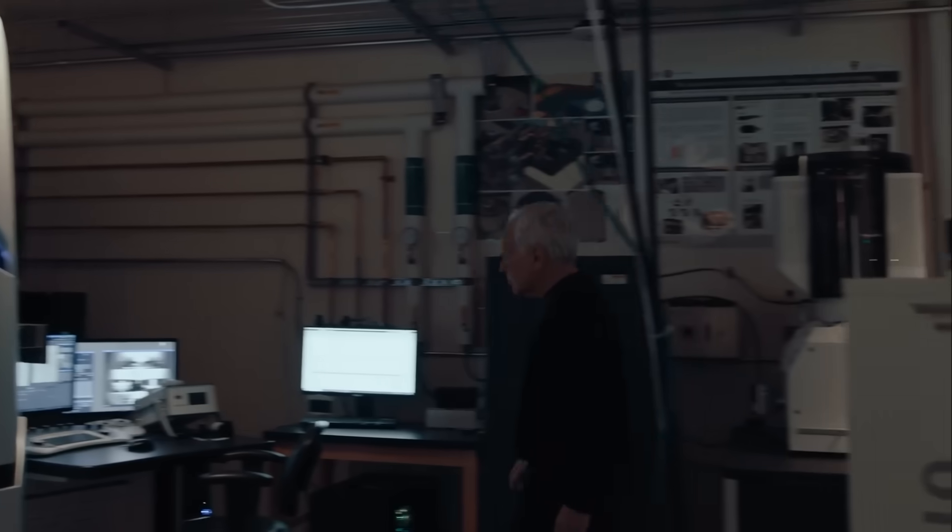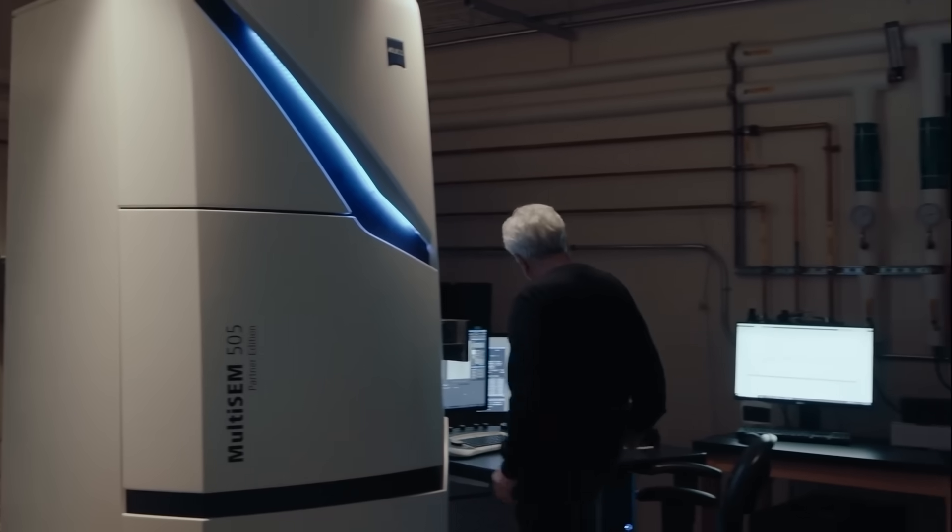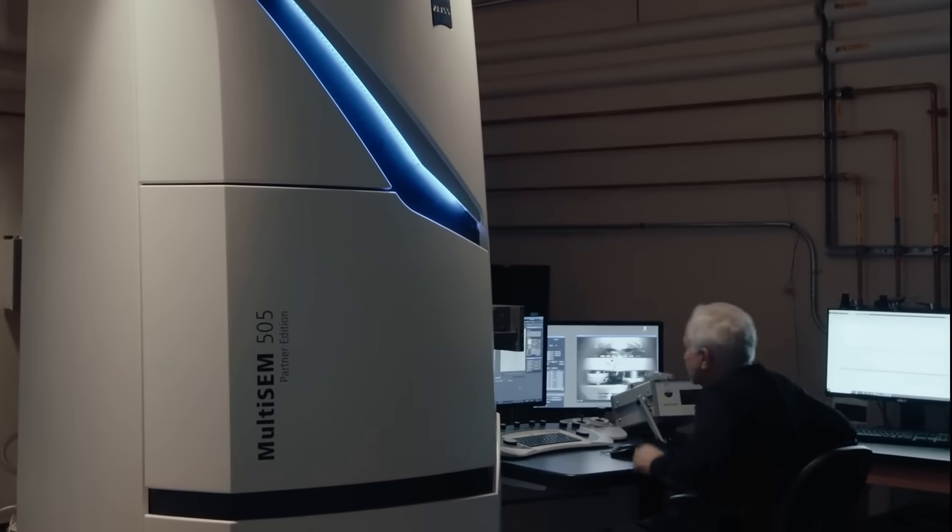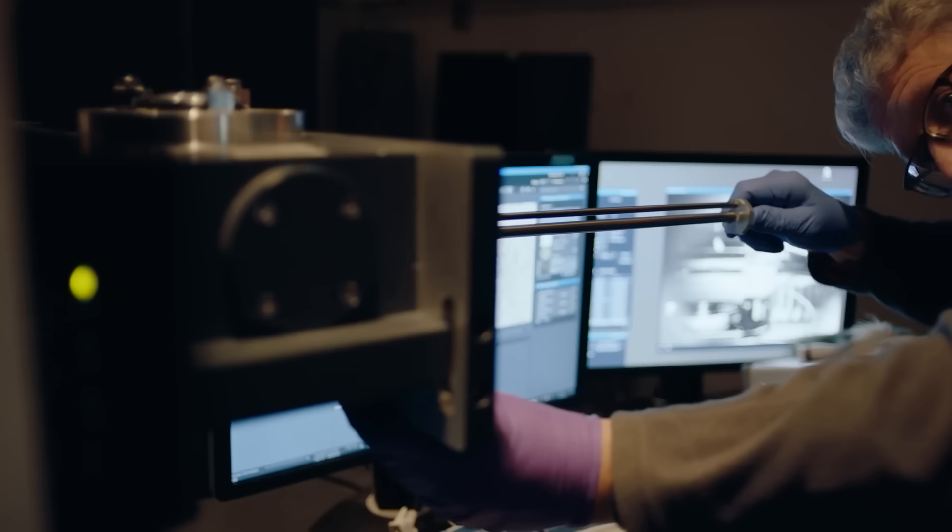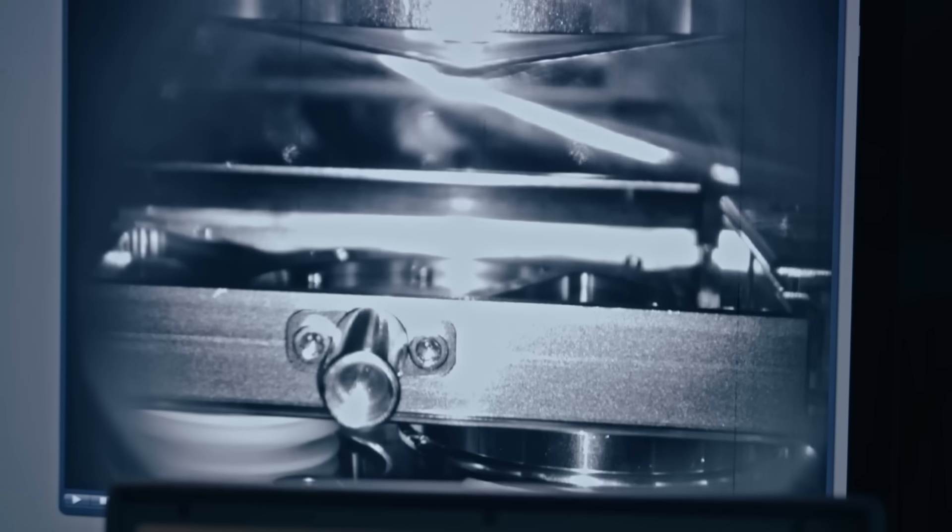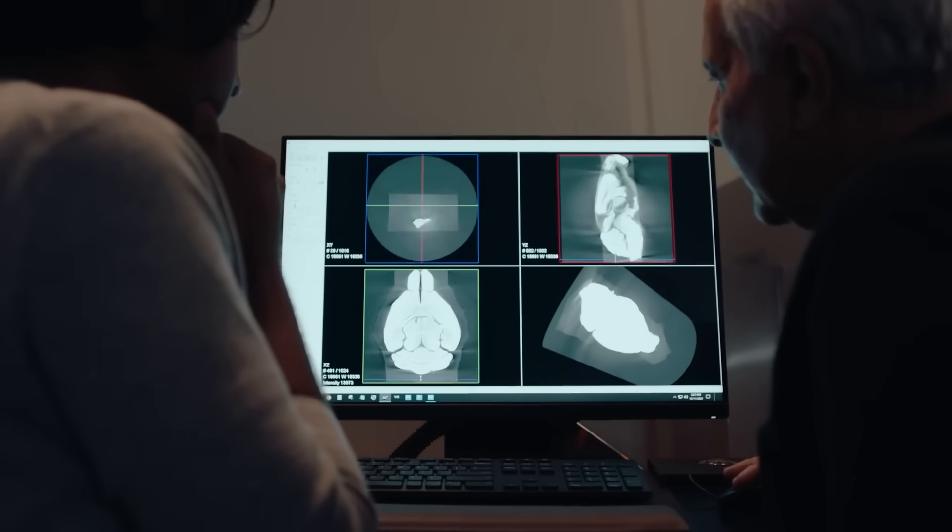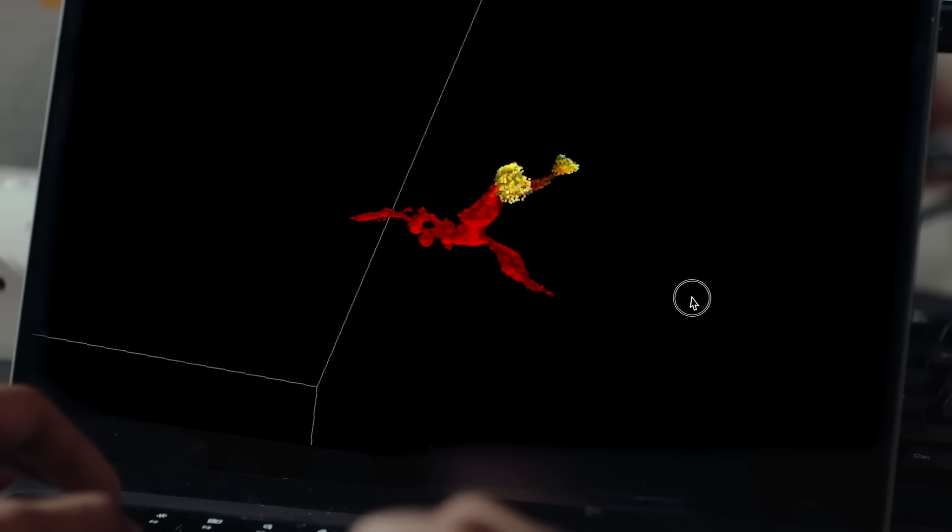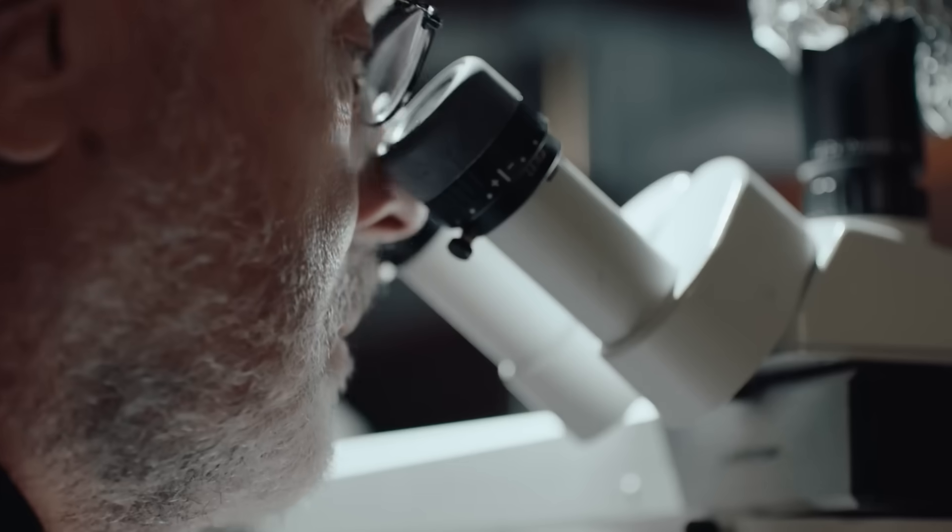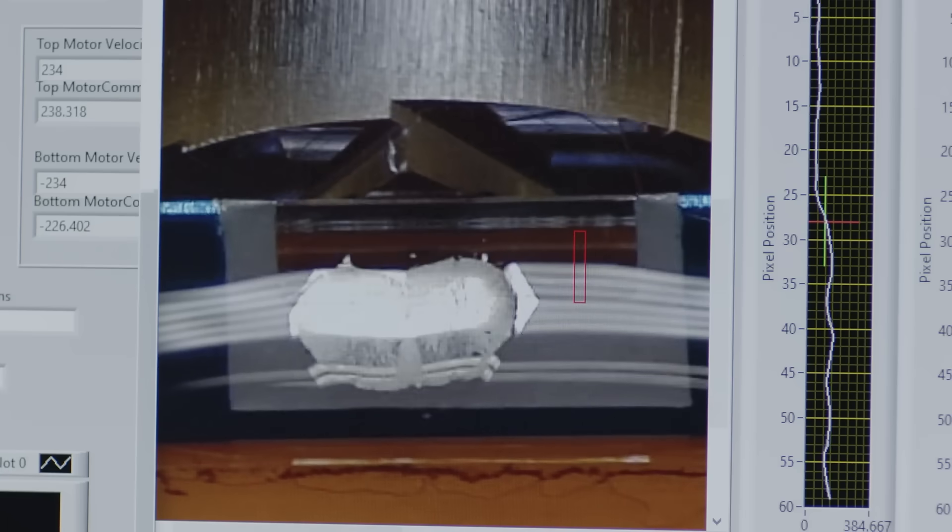This dataset, created from electron microscopy images stitched together with AI, revealed structures never seen before, including new patterns of synaptic organization. Such maps provide neuroscientists with a clearer blueprint for studying memory, disease, and cognition.